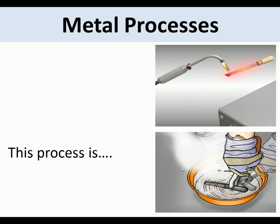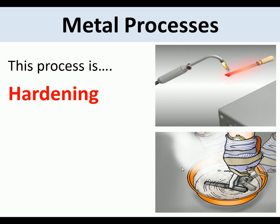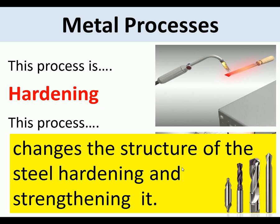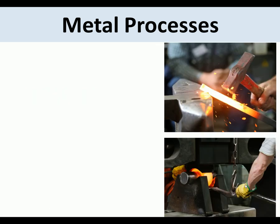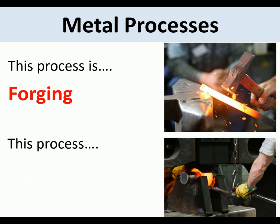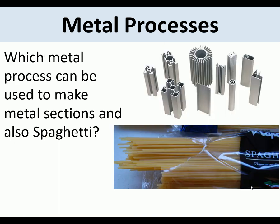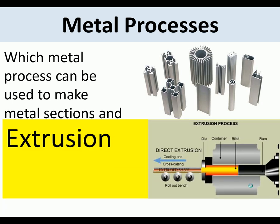Metal processes: this process is hardening, which changes the structure of the steel, hardening and strengthening it — used on things like drill bits. This process is forging, which shapes and strengthens steel. Which metal process can be used to make metal sections and also spaghetti? This process is extrusion, where the metal is forced by a huge force through a die.